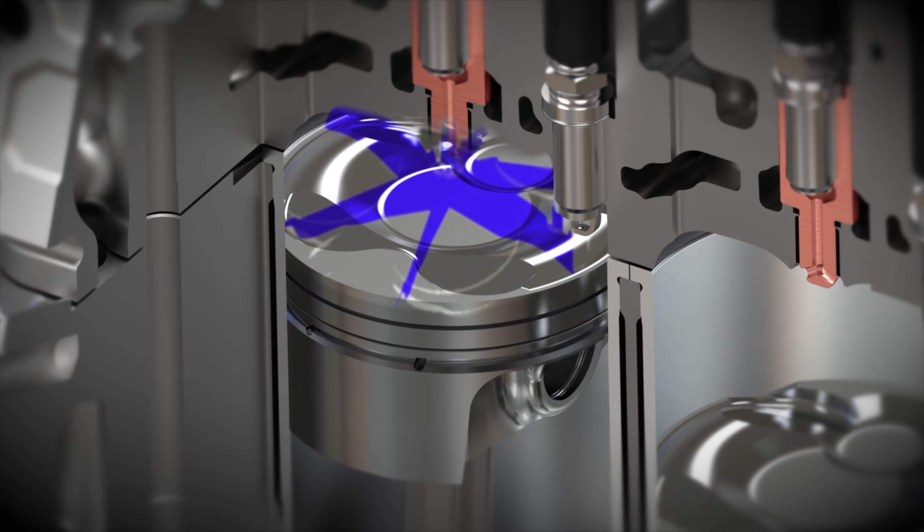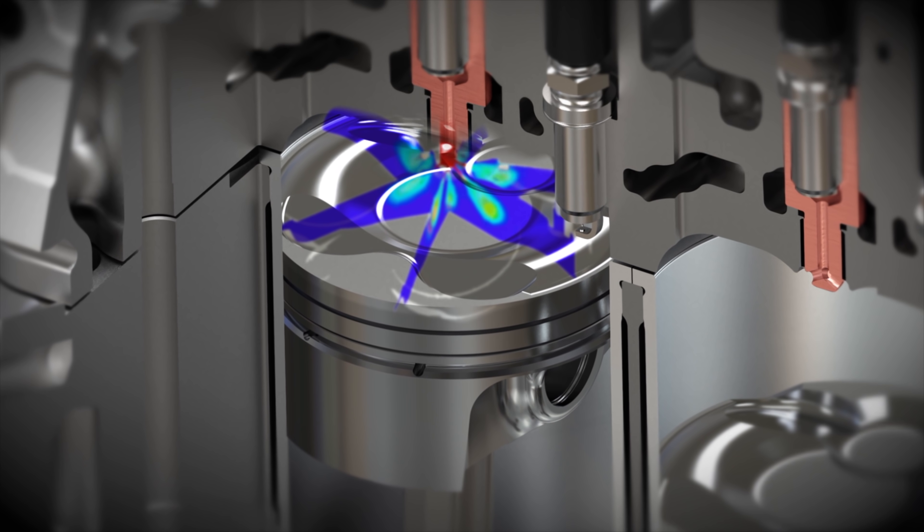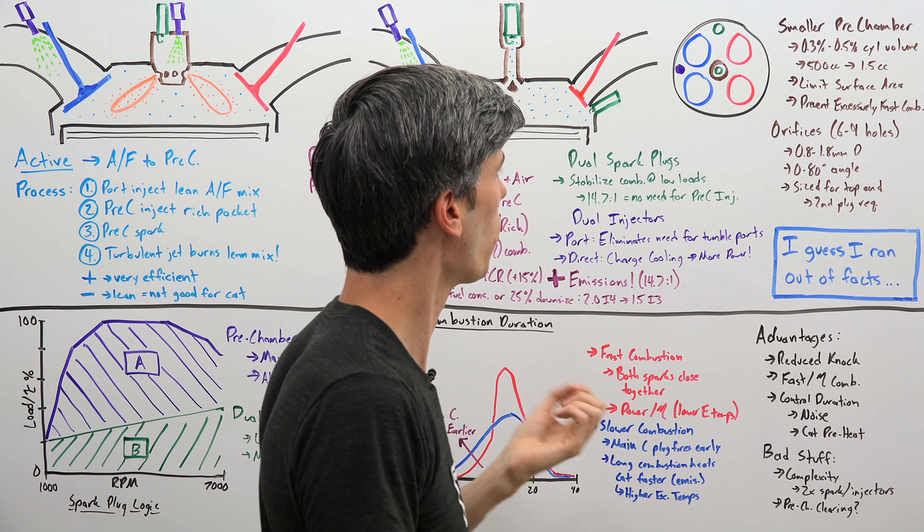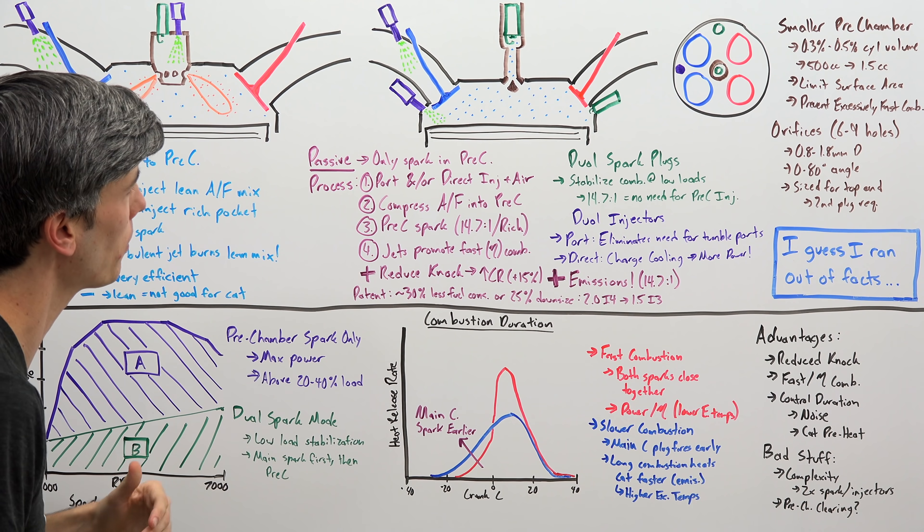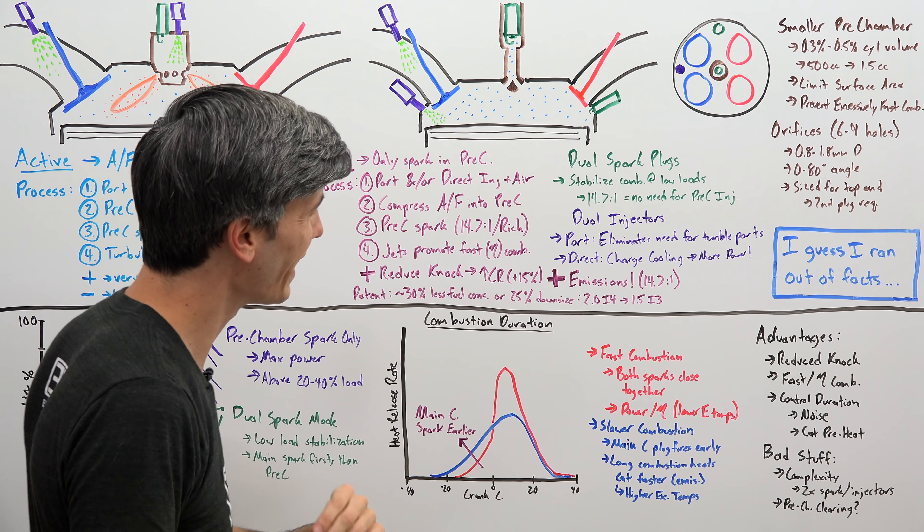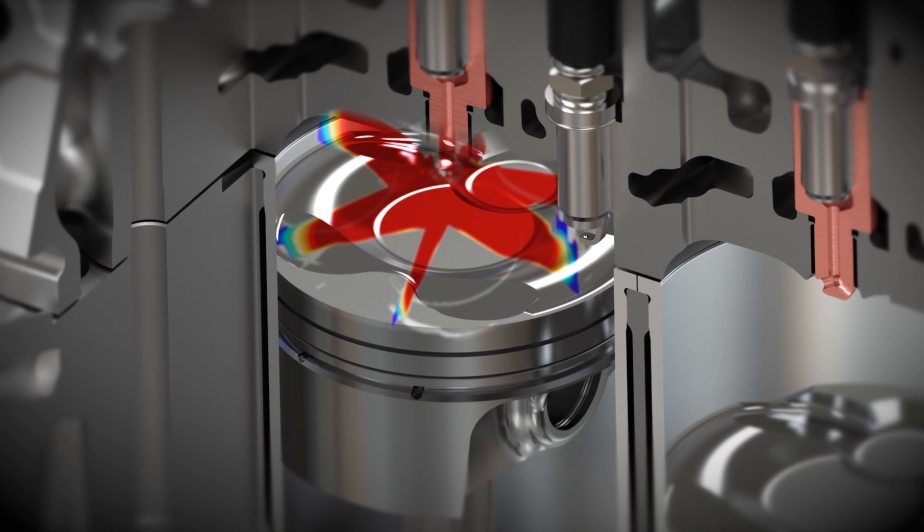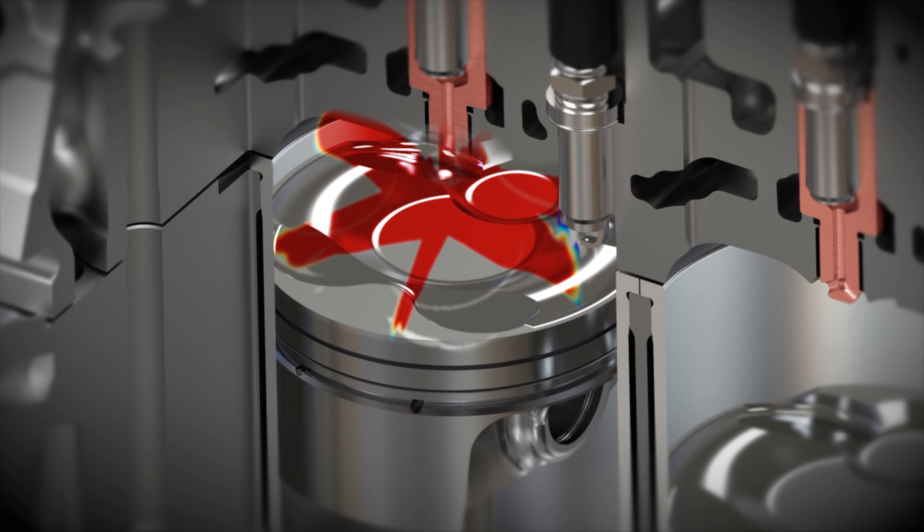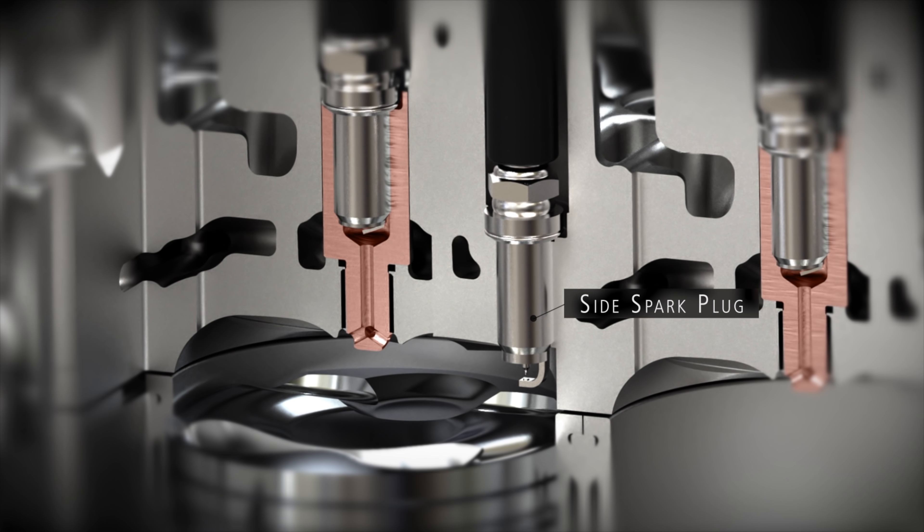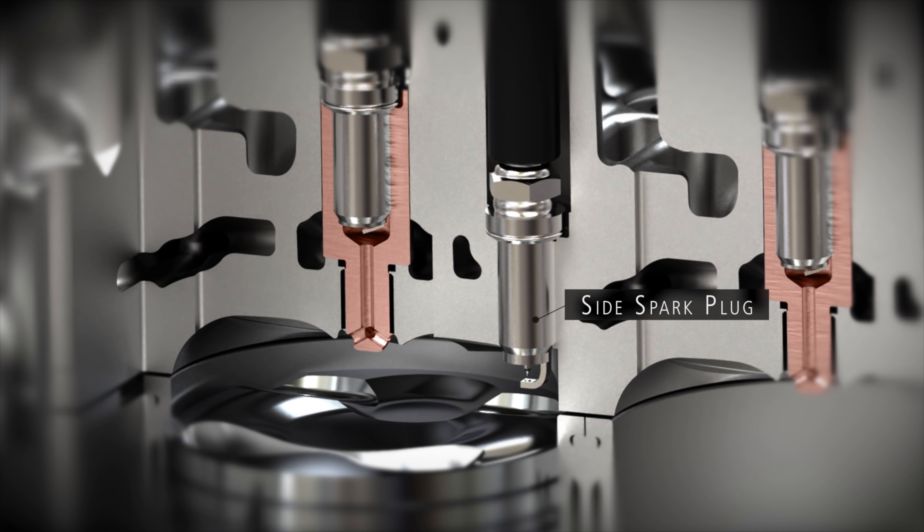But looking at the pre-chamber, there's about 6 to 9 holes according to the patent. They're about 0.8 to 1.8 millimeters in diameter. And coming off the axis of the pre-chamber, they're at about 0 to 80 degree angles. And they are sized for the top end. And then of course you have that second spark plug, which is required for that bottom end, those low load scenarios.